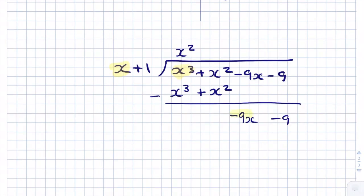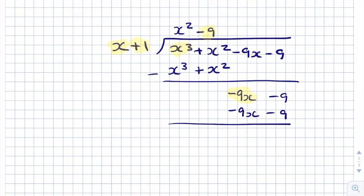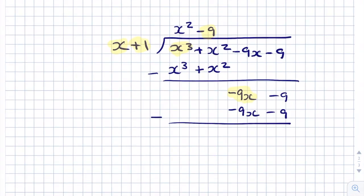We look at the first term carried down and ask how many times does x go into -9x — that's -9 times, so we write -9 above the bus shelter. We multiply -9 by x to get -9x, and -9 by 1 to get -9. We subtract: -9x + 9x cancels out, and -9 + 9 cancels out. So our remainder is equal to 0.